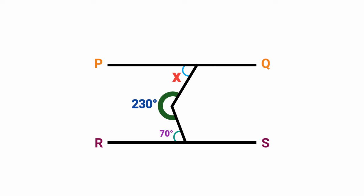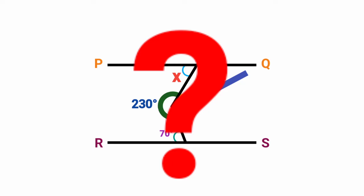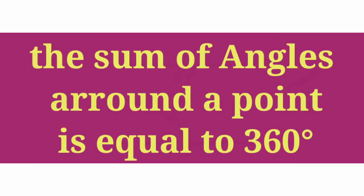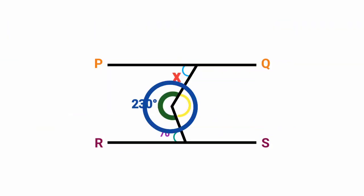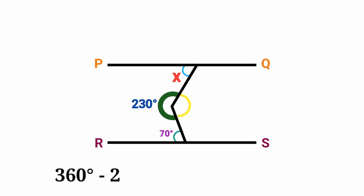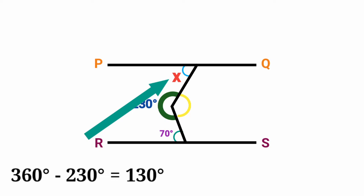There are two ways you can solve these questions. Let's try the first way. Let's first find this angle here. We don't know its value, but we know this is a point, so let's use the rule that says the sum of angles around a point is equal to 360 degrees. This whole angle around this point is 360 degrees, and we're given 230 degrees, so we do 360 degrees minus 230 degrees, which gives us 180 degrees. So this angle here is 180 degrees.